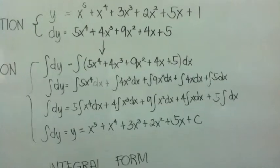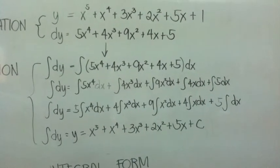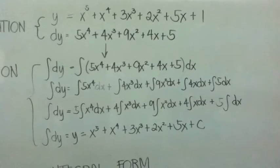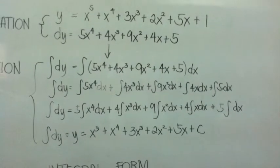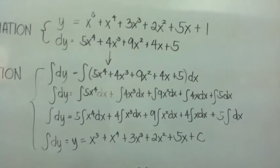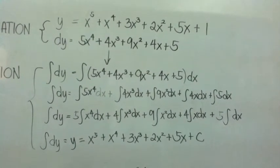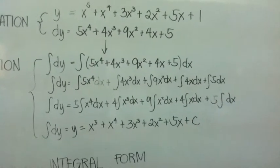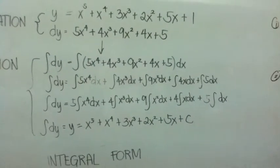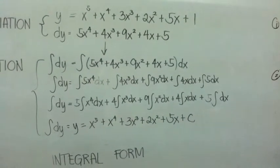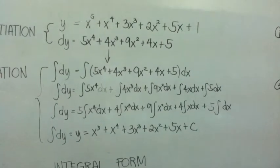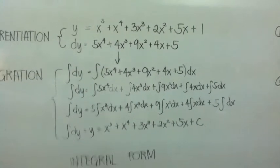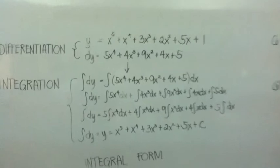Apply the same process to the rest. Add 1 to 3, you get 4. Then divide the expression by 4. 4x cubed would be x to the 4th. For the remaining expressions, all you have to do is reverse the power rule — so instead of multiplying and subtracting, you would be adding and dividing.